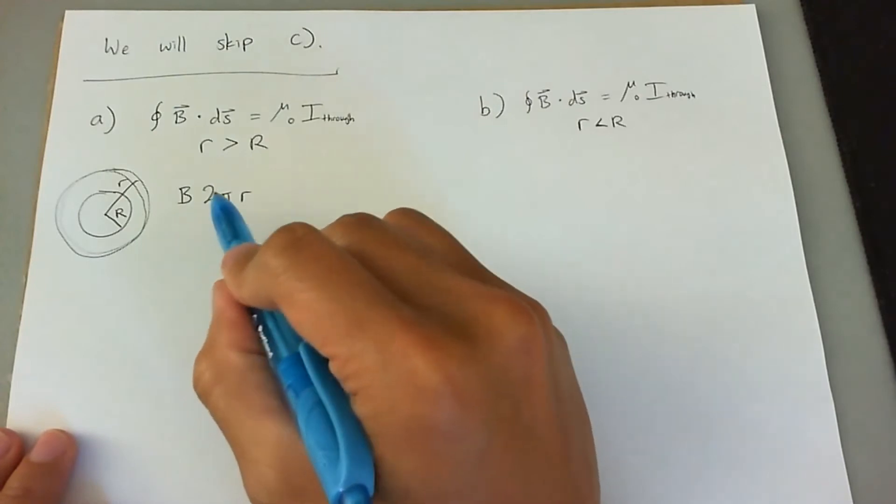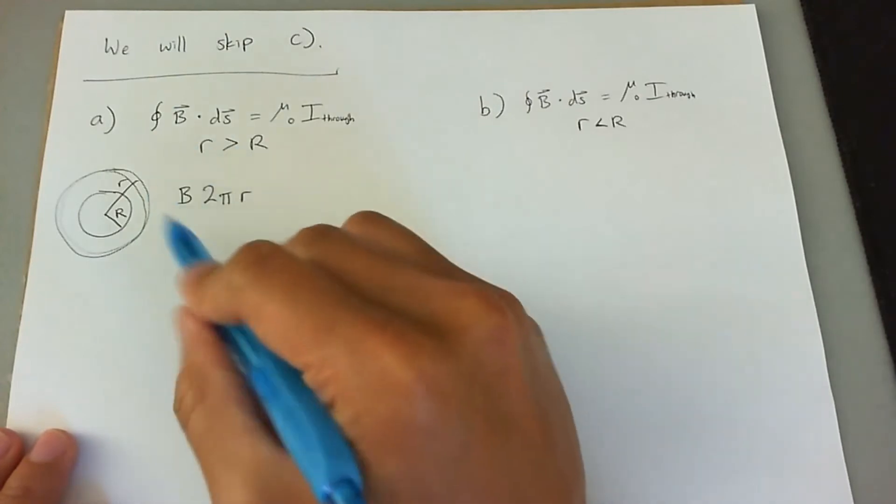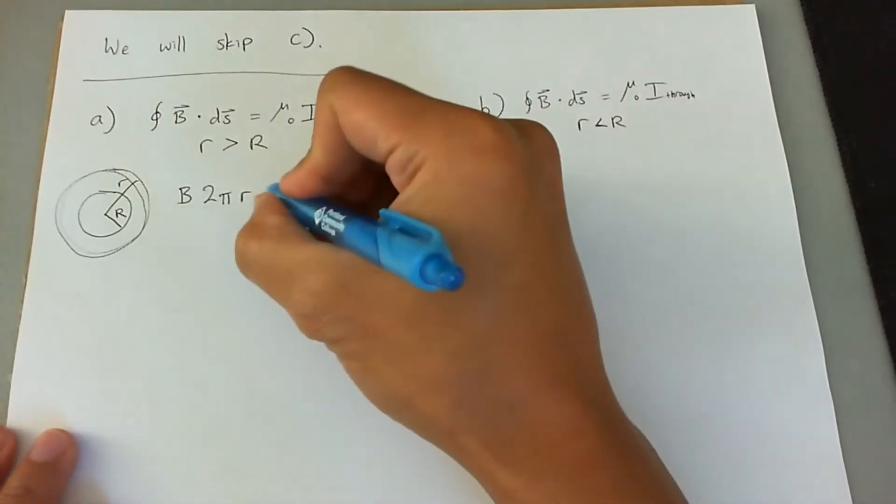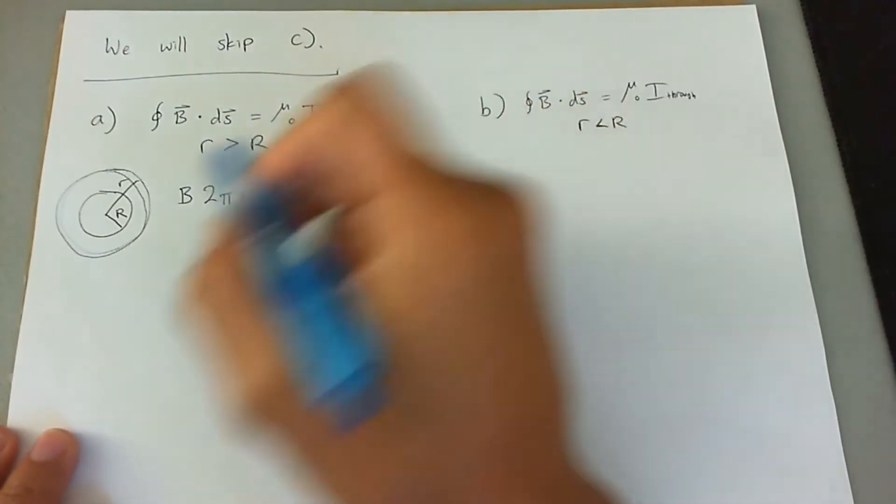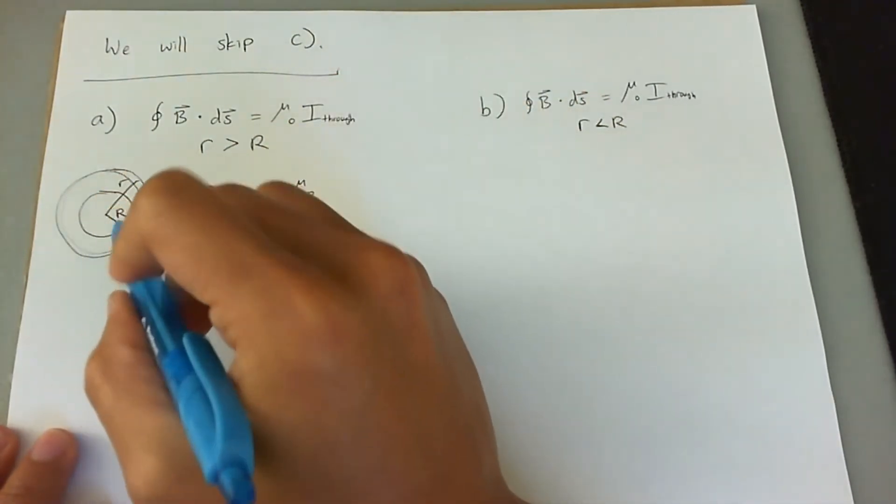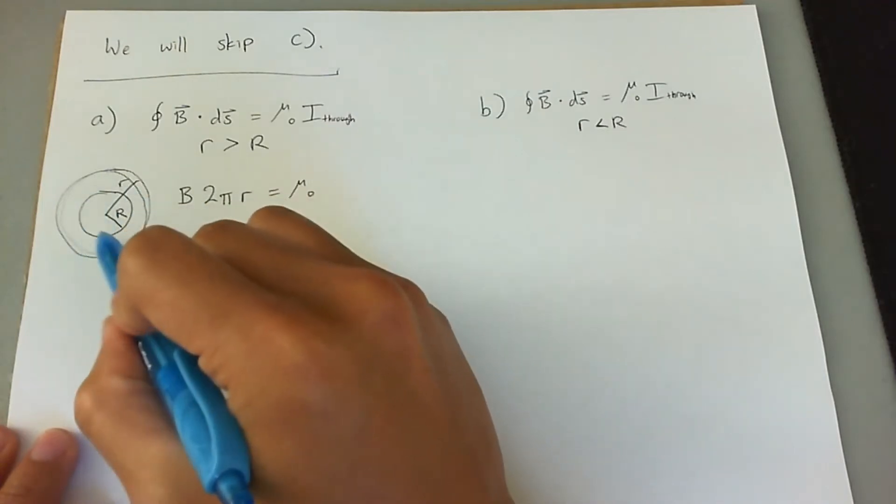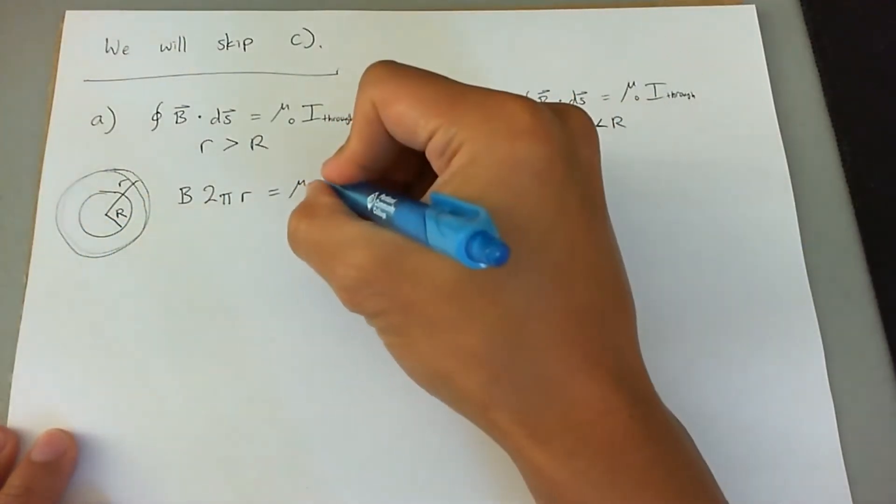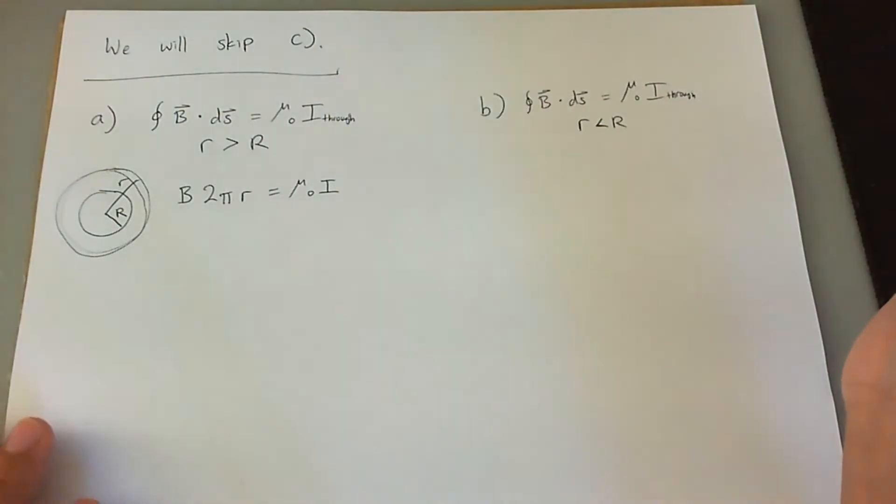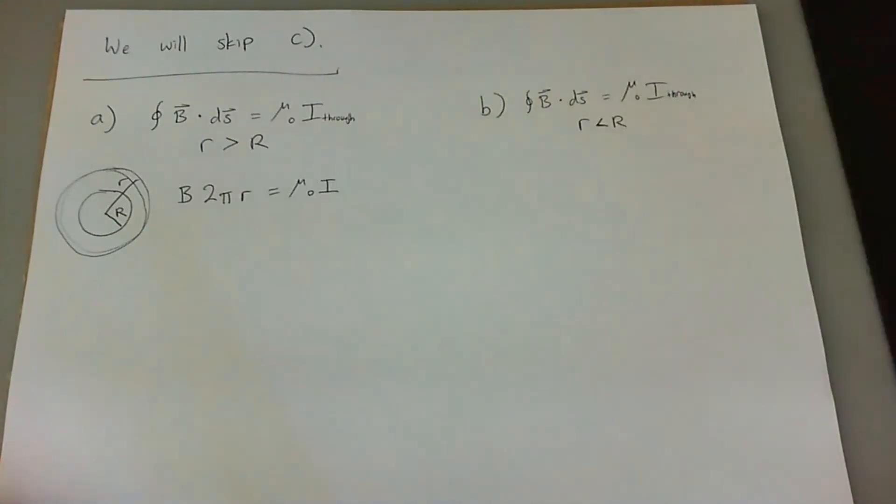I'm going to have big R being the distance from the center to the edge of the current carrying wire. So B 2 pi r, and that's the complete circle integral, is going to equal to mu naught. And the entire I that's going through this Amperian loop is the entire I that's going through the cylinder. So I could just say I as it is right here.